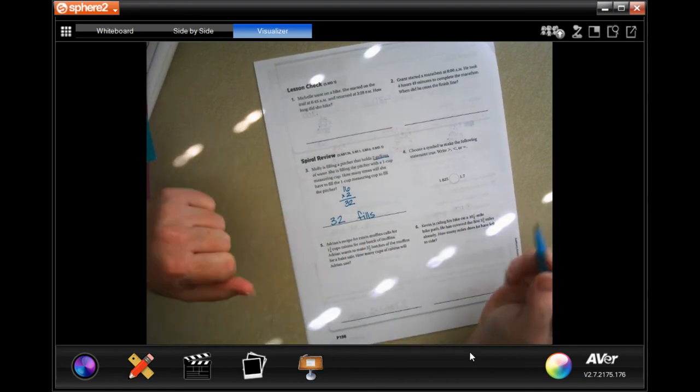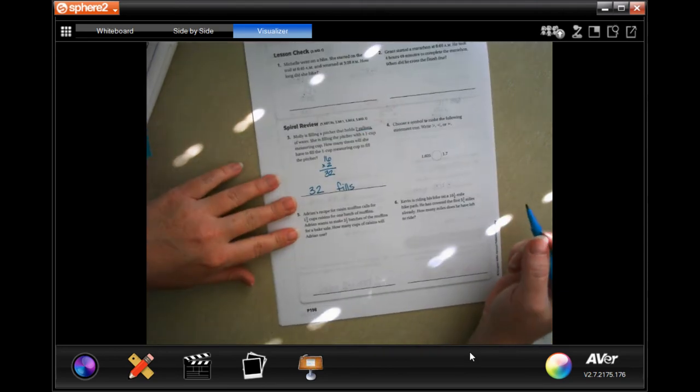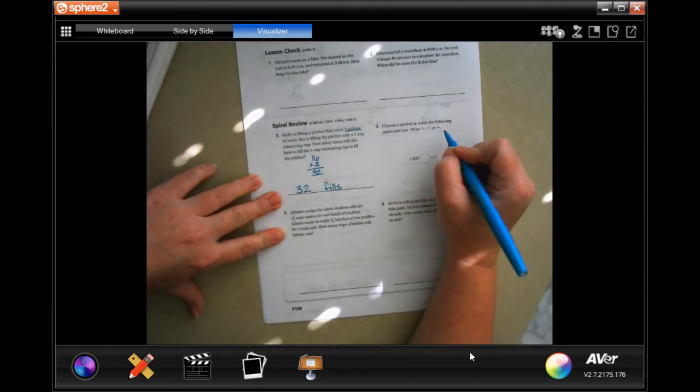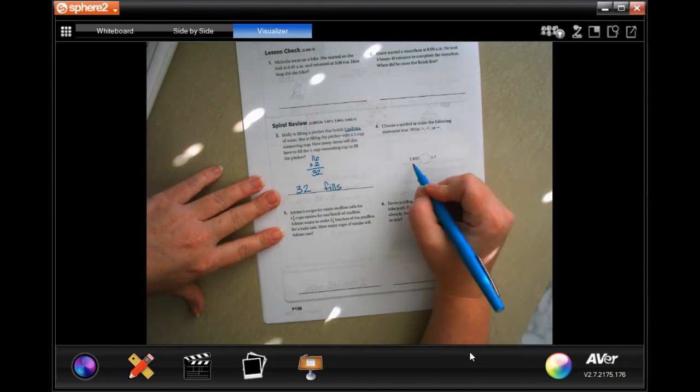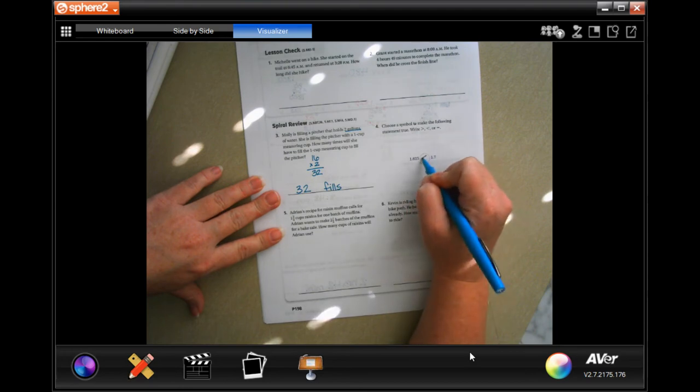Which symbol will make the following statement true? You have both of them with one point, and then that one has seven and that one has six. Well seven is bigger than six.